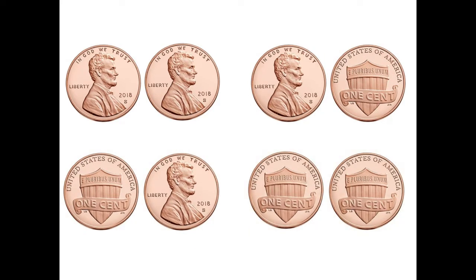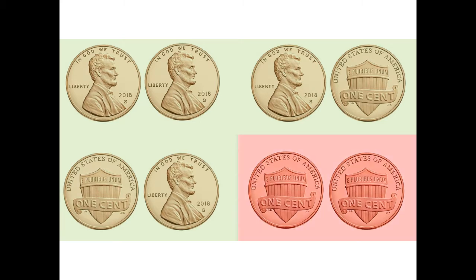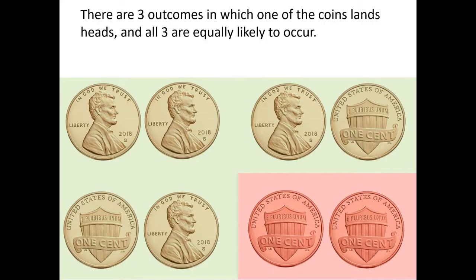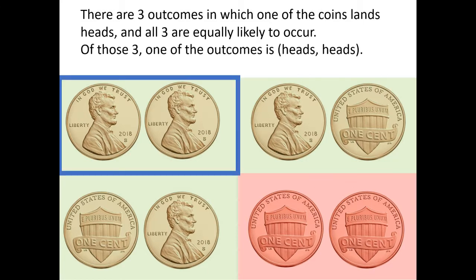When we examine the question at hand again, we are only considering three of those four results. I told you that at least one of the coins flipped landed heads, so we are not considering the tails-tails result. Of these three possible results, all three are equally likely to occur, but only one of them is heads-heads. Thus, the answer to our question is actually one third.